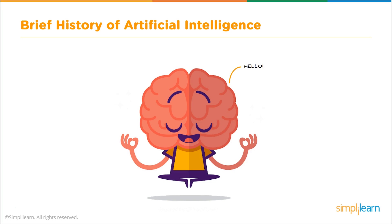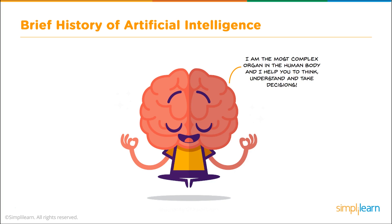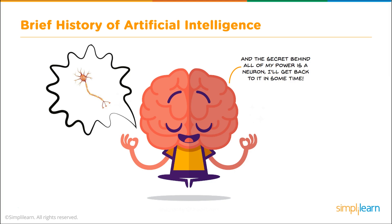Let's start with a brief history of artificial intelligence. I am the human brain — the most complex organ in the human body. I help you to think, understand, and make decisions. And the secret behind all my power is a neuron.